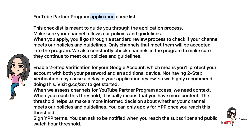YouTube Partner Program Application Checklist — this checklist is meant to guide you through the application process. Make sure your channel follows policies and guidelines; only channels that meet them will be accepted into the program. YouTube also constantly checks channels in the program to make sure they continue to meet policies. Enable 2-step verification for your Google account, protecting it with both your password and an additional device. Not having 2-step verification may cause a delay in your application review, so it's highly recommended.